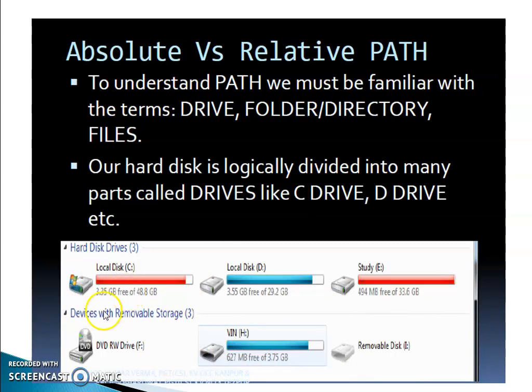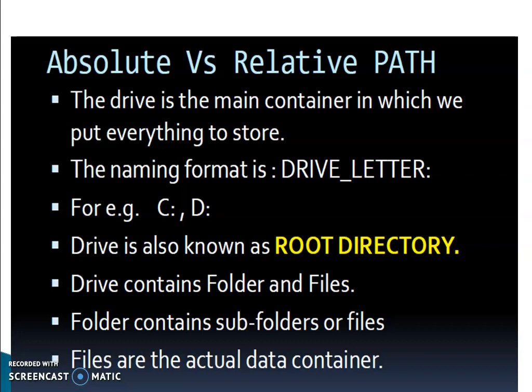In this picture you can see the components of the hard disk — C drive, D drive, E drive. All drives are depicted by one character and one colon; that is the symbol to represent a hard disk or drive. The drive is the main container in which we store everything. It is also known as the root directory. Drive contains folders and files. Folders may contain subfolders or files, and files are the actual data containers.